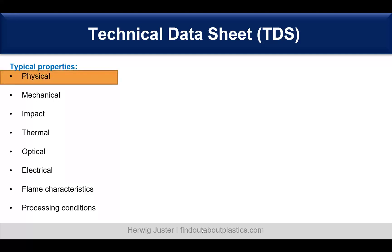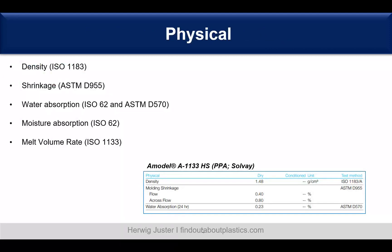Let's start with the physical properties — what do we understand under physical properties? These are usually density, shrinkage and molding shrinkage, water absorption, moisture absorption, and melt volume rate. Here is an example snapshot of a TDS for Amodel A1133 — a PPA with 33% glass fiber reinforcement. You can see the density in the dry state and also the conditioned state for this aromatic polyamide, the test method, molding shrinkage in flow and across flow, and water absorption at 24 hours according to ASTM D570.